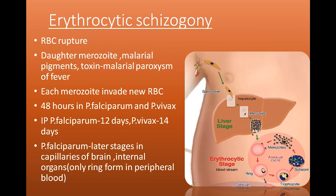The fever occurs every third day — every 48 hours — in the case of Plasmodium falciparum and vivax. The incubation period of Plasmodium falciparum, from entry of sporozoites until symptoms start, is around 12 days. In Plasmodium vivax, it is 14 days.